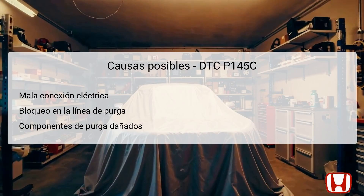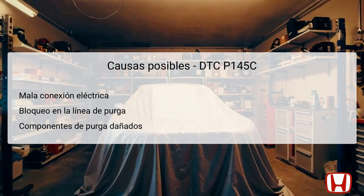Several factors can contribute to DTC P145C being triggered. One common issue is a poor electrical connection within the wiring or connectors related to the EVAP system, which may disrupt the signal between components. Additionally, a blockage in the purge line can prevent vapors from flowing correctly between the EVAP canister and the purge valve, leading to malfunction. Damage to either the EVAP canister itself or the purge valve can also result in improper system operation. Furthermore, if additional diagnostic trouble codes such as P0496 or P0497 are present, they should also be addressed since they directly relate to the EVAP system purge flow.